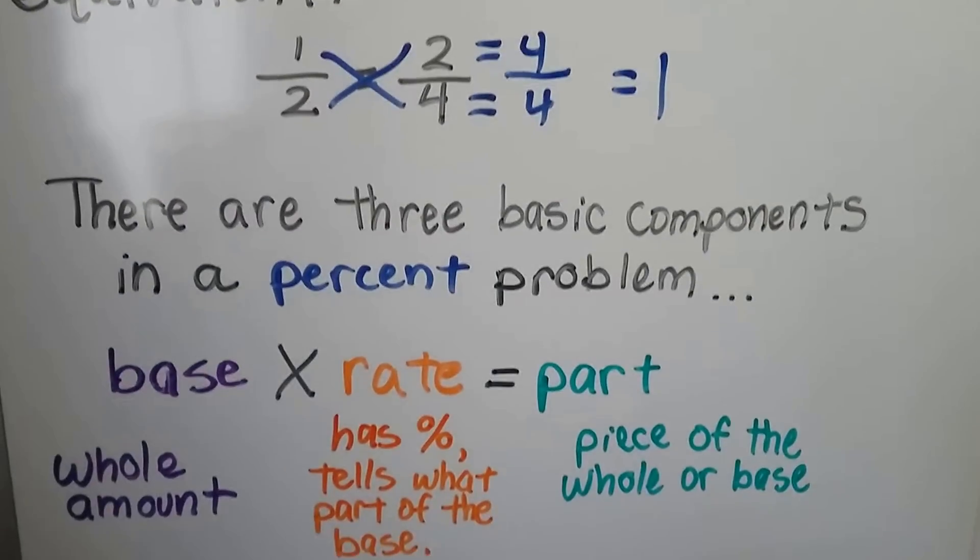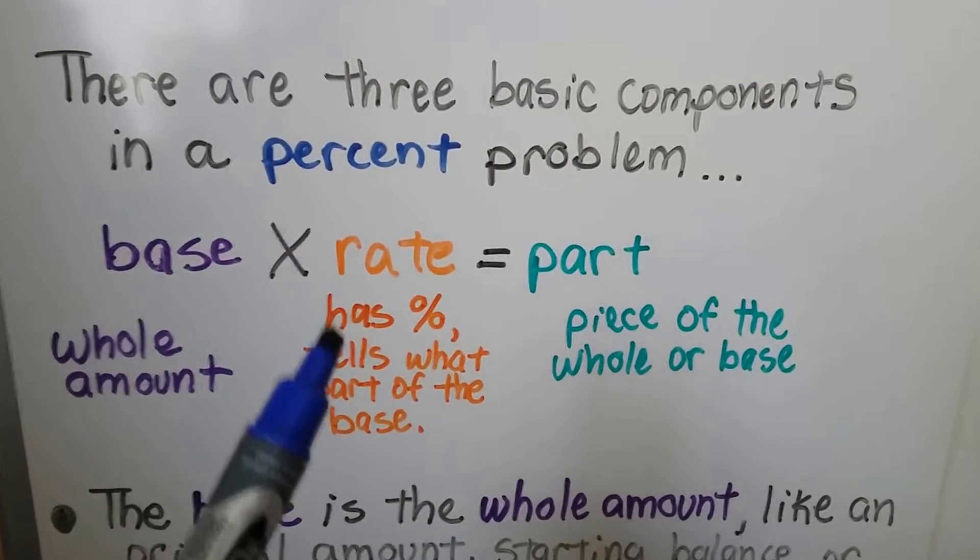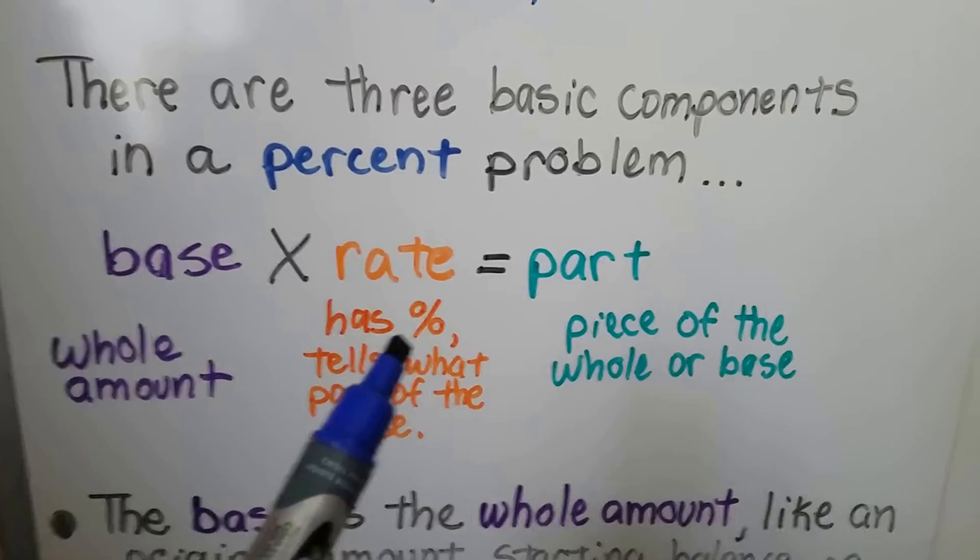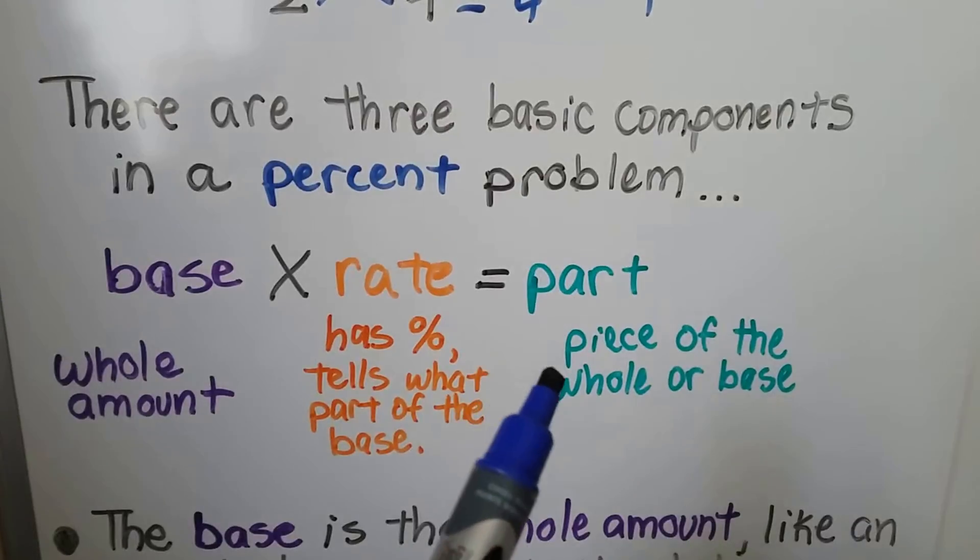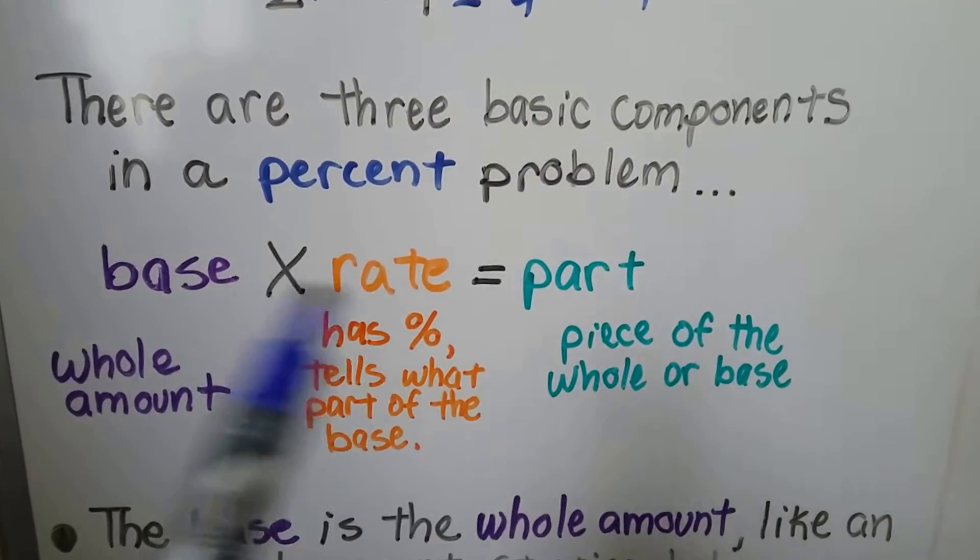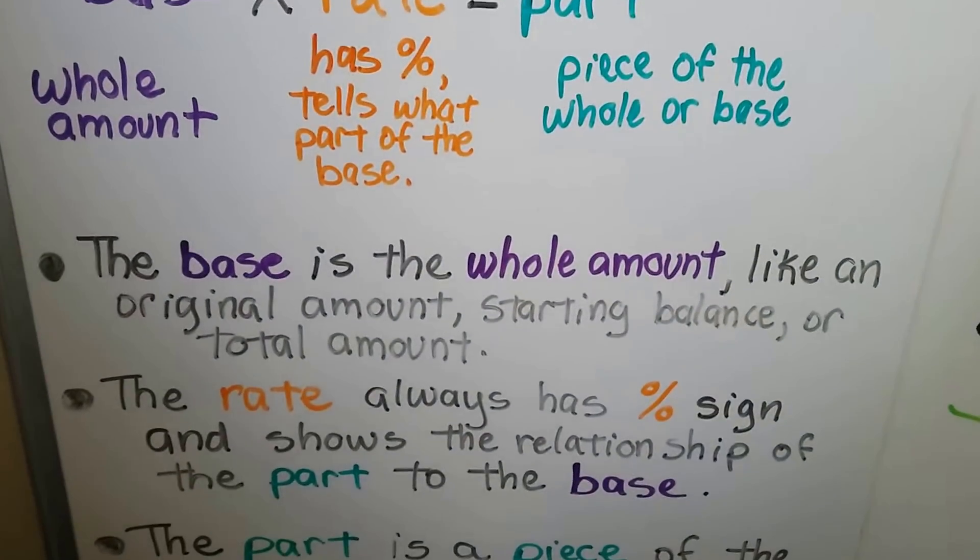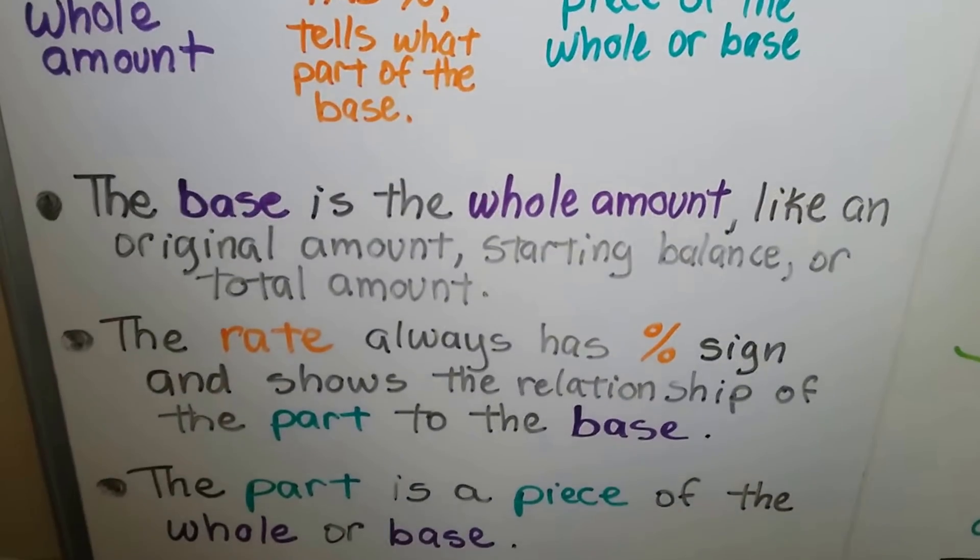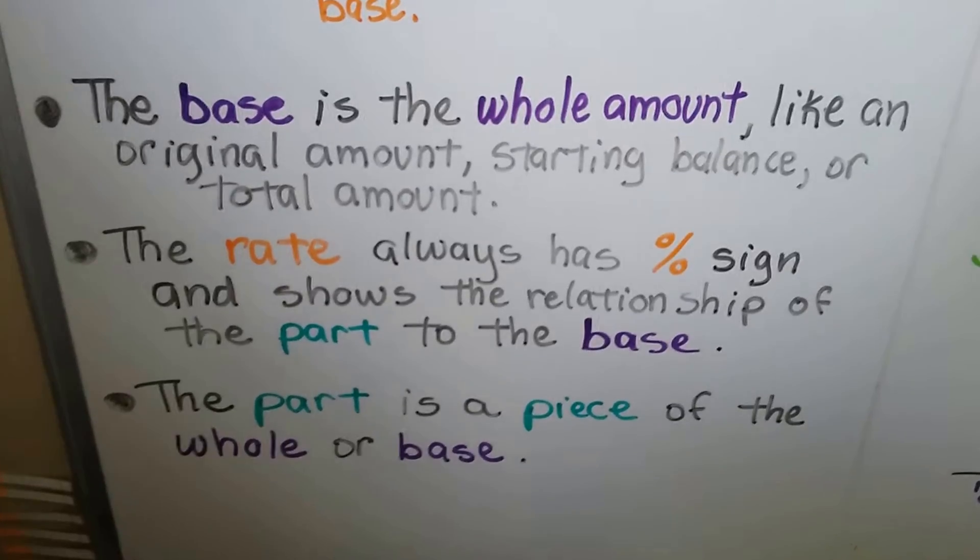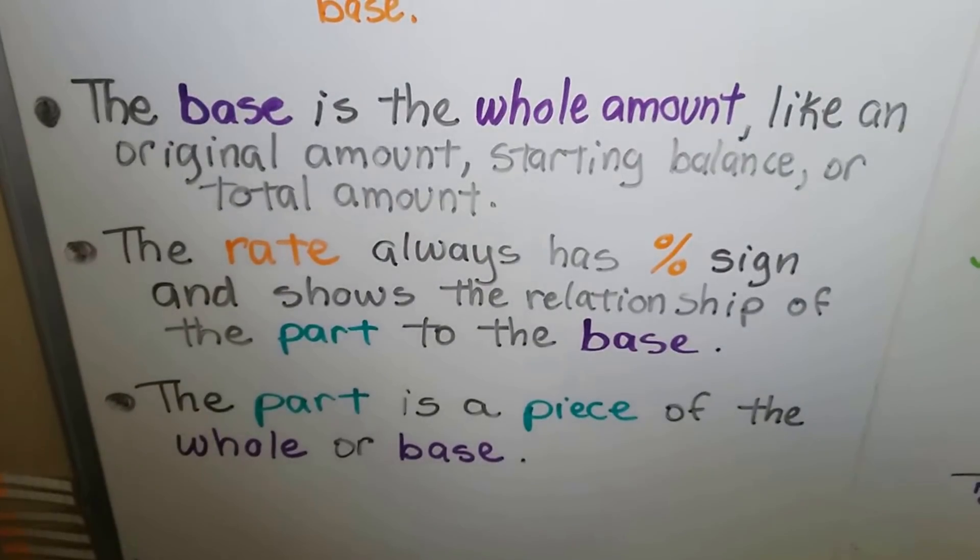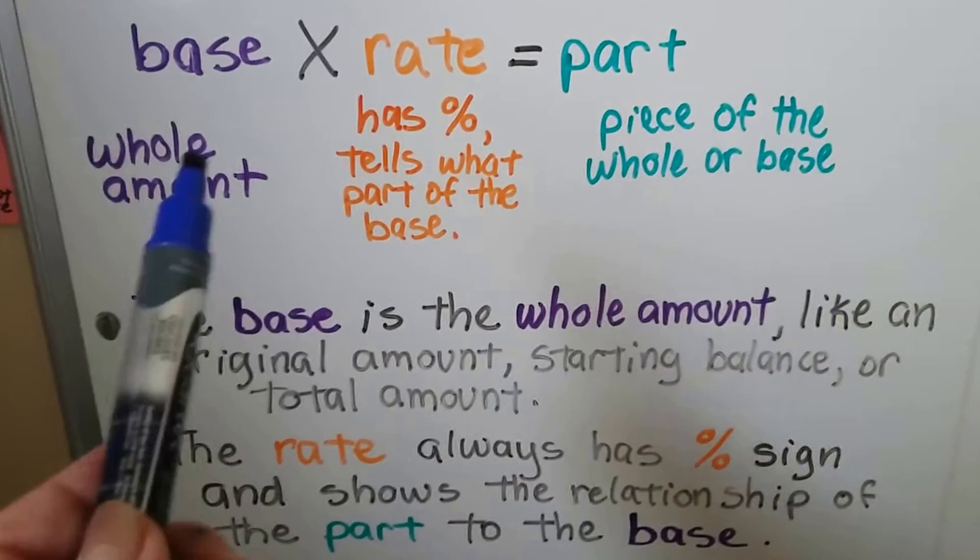There are three basic components in a percent problem. There's a base, which is the whole amount, that gets multiplied to a rate, which always has a percentage sign, and it tells us what part of the base it is, and it's going to equal the part, which is piece of the whole or the base. It's going to be a piece of this base.